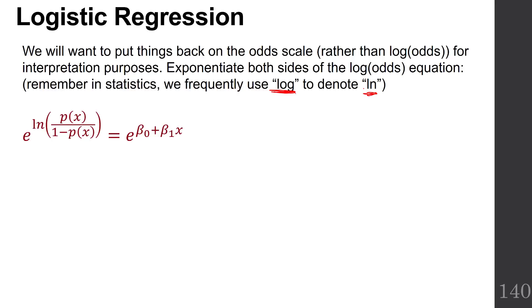So we had our natural log of p over 1 minus p equaling beta naught plus beta 1x. And all we've done to that equation is just take e and raise both of those sides of that equation with base e.